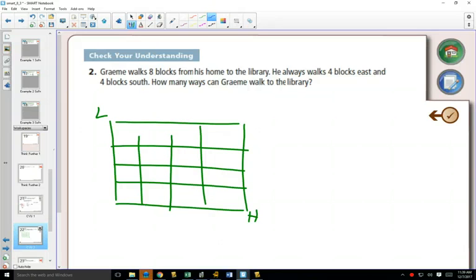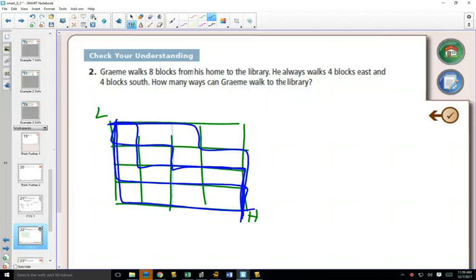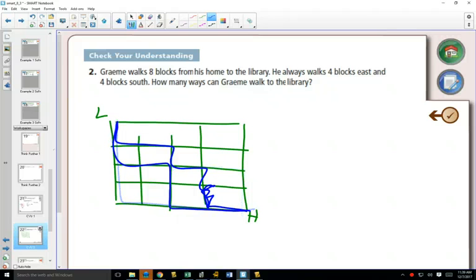So if we count, this could be one route, this would be another route. Tell me when I do one that I've done already, okay? Are we okay so far? I did the same one twice? Oops, that one can't do that. So if we just try to count them, can you see that this could be very confusing?